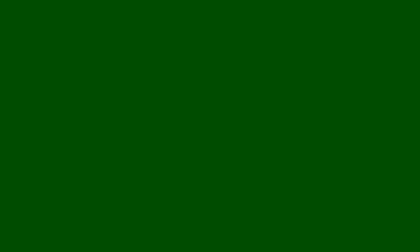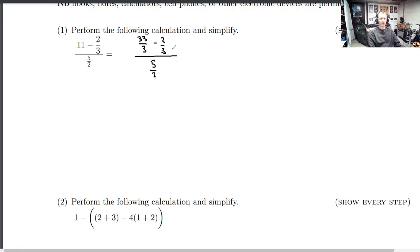So this first question just says to perform the following calculation and simplify. There's multiple ways to do this from the beginning. But right away what I will do is rewrite the top of this fraction to have a common denominator. I know that 11 is the same as 33 out of 3. I'm writing it that way because this fraction has a 3 in the denominator. And now that they have the same denominator, I can just do the subtraction. 33 minus 2, which is 31.